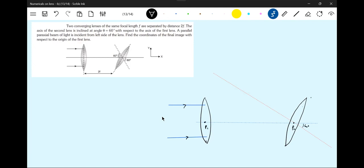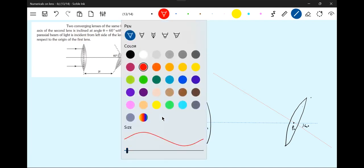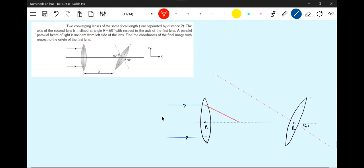Now, where the ray will converge at a point. This distance is here. This will be the I1.